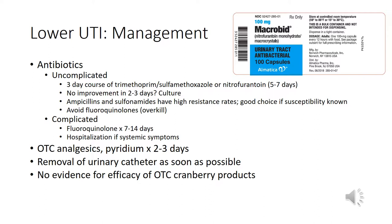Fungal urinary tract infections should be treated with fluconazole 200 milligrams daily for seven to 14 days. Patients who have chronic urinary tract infections should have prophylactic therapy considered — either daily suppressive therapy or post-coital therapy after intercourse. Trimethoprim, macrodantin, and cephalexin are all used in practice. Patients presenting with recurrent UTIs should be referred to a urologist for further evaluation.